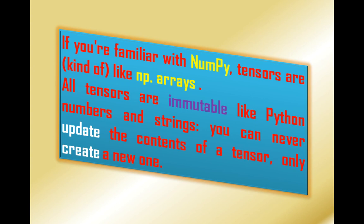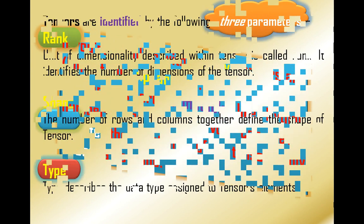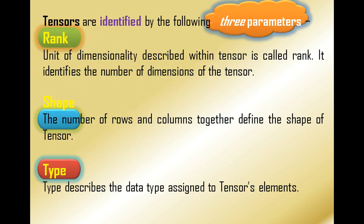All tensors are immutable like Python numbers and strings — that means you can never update the contents of a tensor, only create a new one. Tensors are identified by three parameters: rank, shape, and type. Rank is the unit of dimensionality described within a tensor; it identifies the number of dimensions. The number of rows and columns together define the shape of a tensor, and type describes the data type assigned to the tensor's elements.